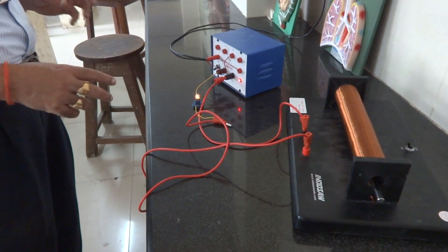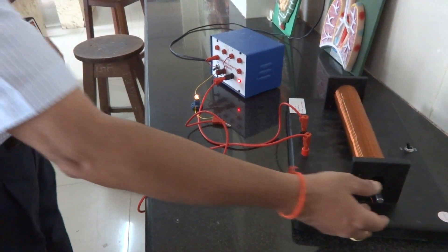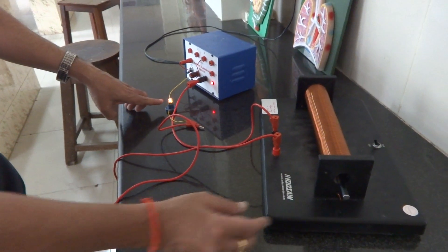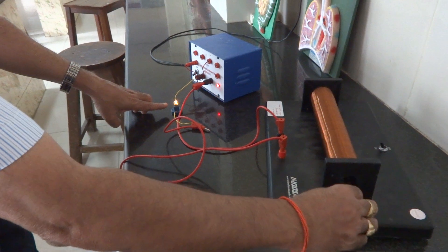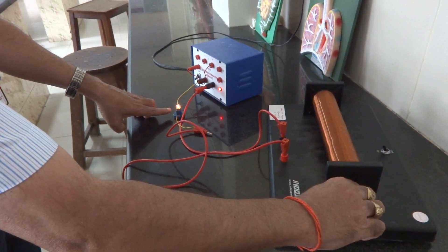Therefore the current passing through the circuit is decreased. Now if I take it out, you will see this bulb will again gain its brightness.